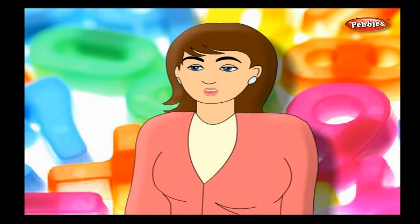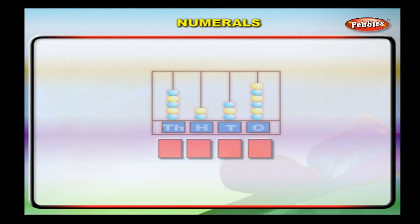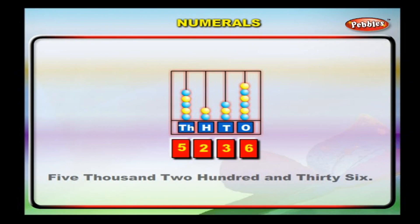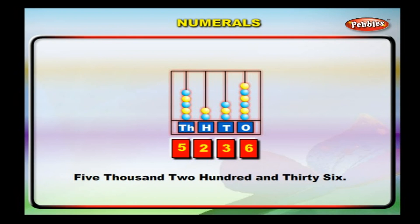Next, we will read the abacus and write the numerals and the number names. In this abacus, we have six beads in the ones column, three beads in the tens column, two beads in the hundreds column, and five beads in the thousands column. We write this as 5,236. We write this in words as five thousand, two hundred and thirty-six.